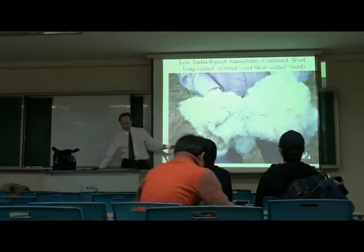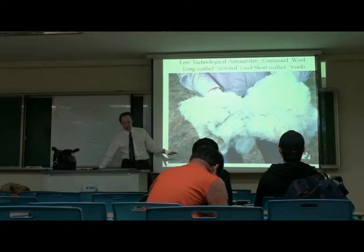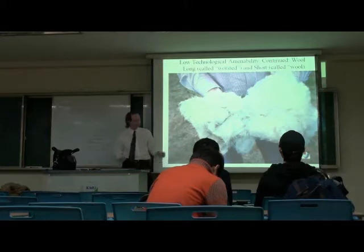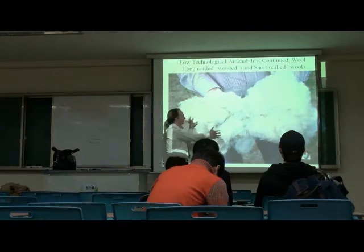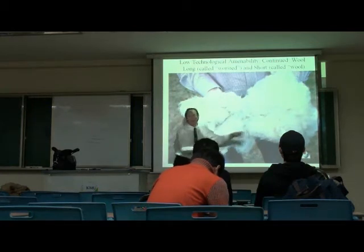There's two different wools in this picture. This is the longer wool, called worsted. And that is the short fluffy wool, called wool. Different technologies and different cities were built on this. You have one city based on worsted in England and one city based on wool.